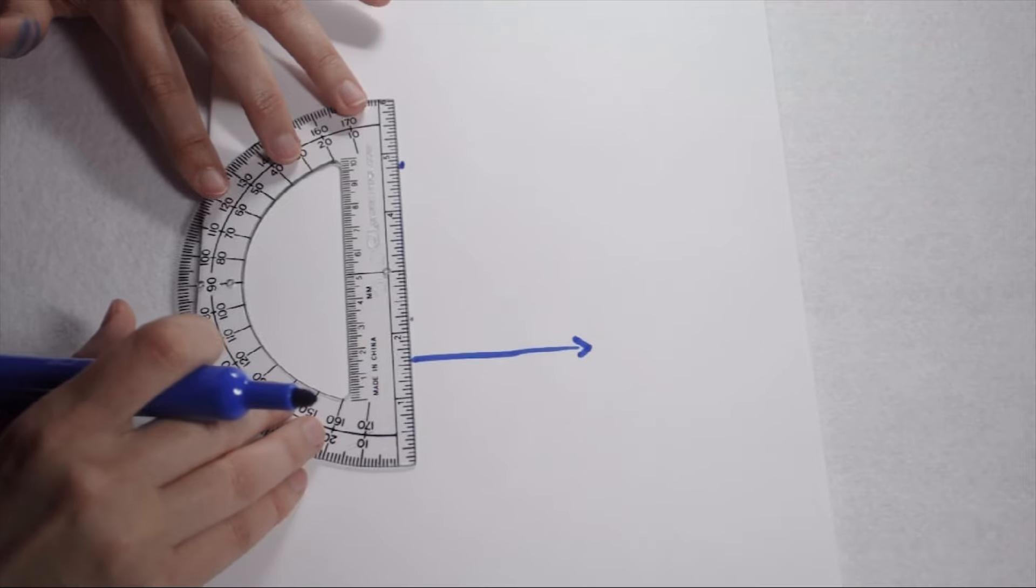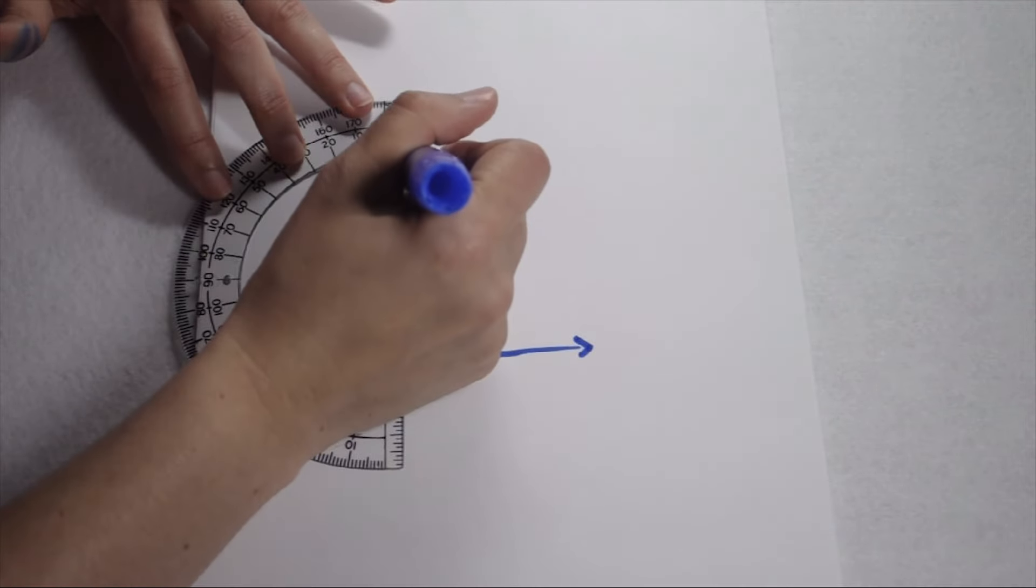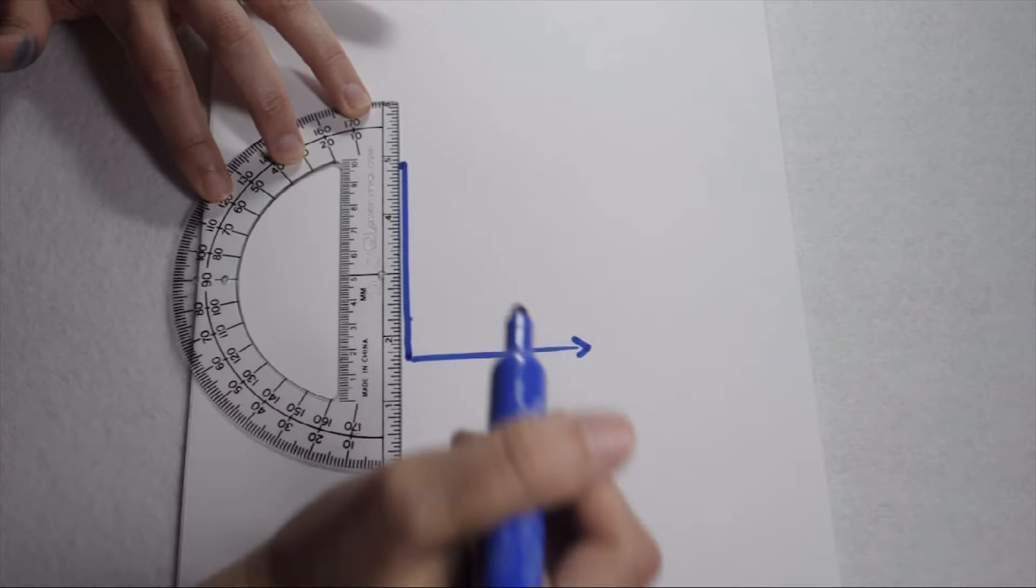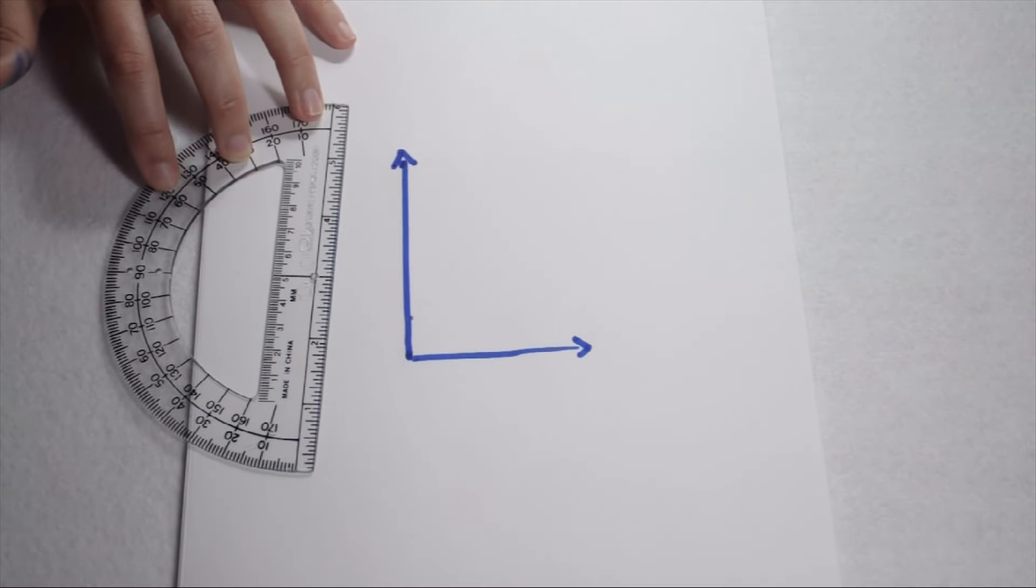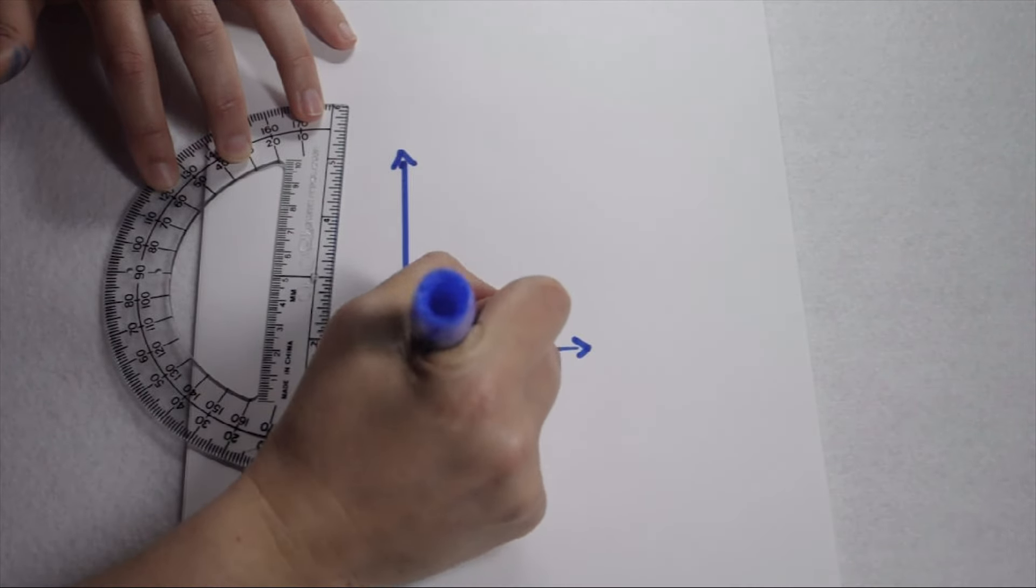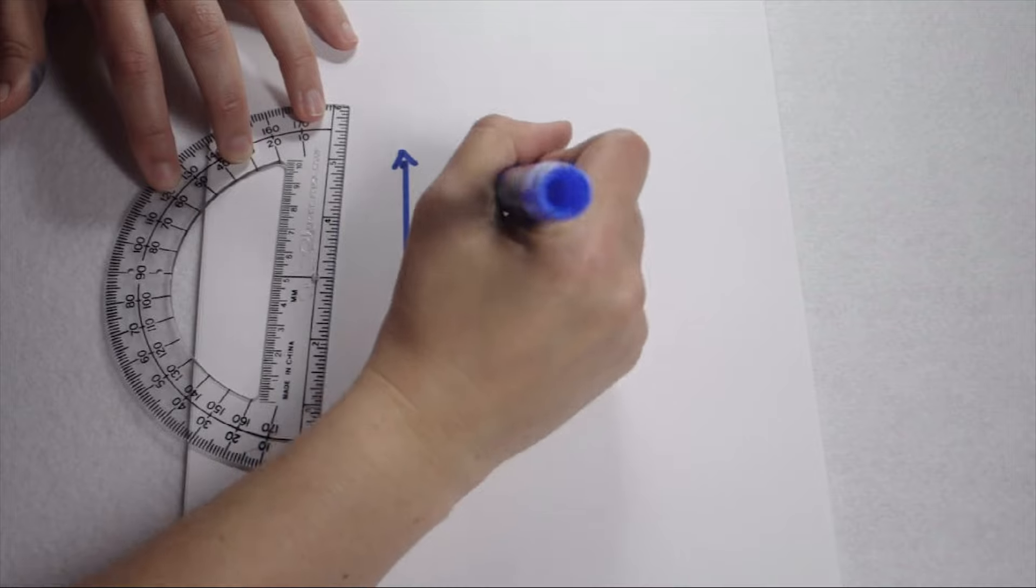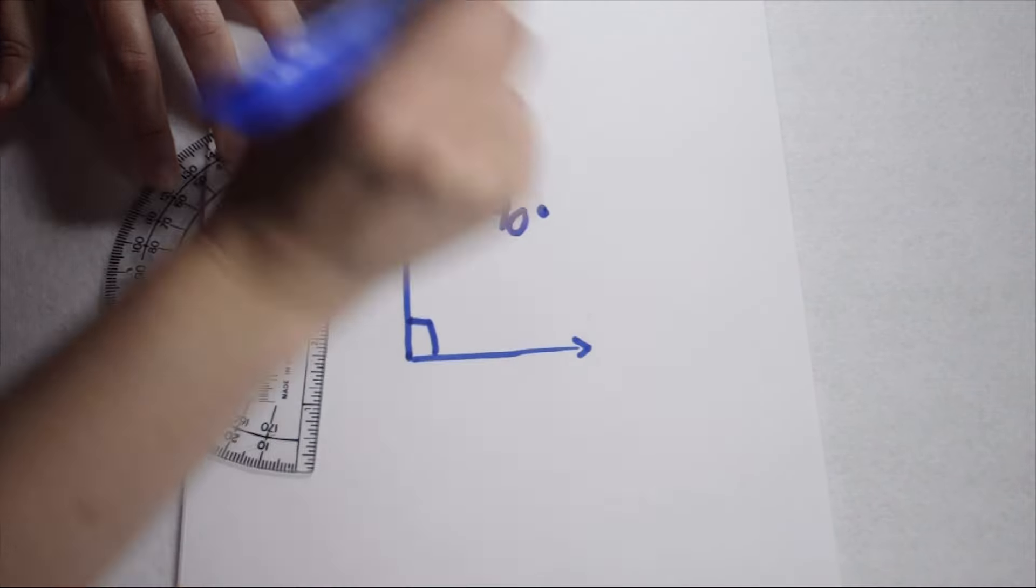Again, I can use my protractor as a straight edge and connect my mark to my bottom ray. Now, we're going to label it with a box and a corner to show it's 90 degrees. We have our angle.